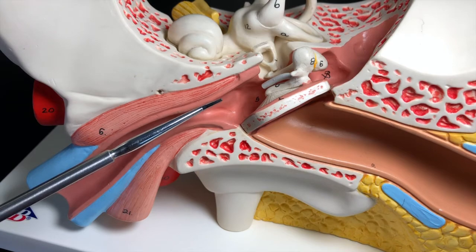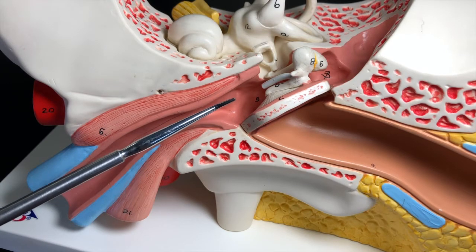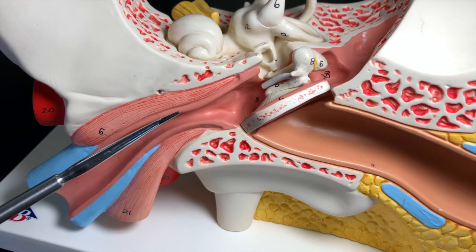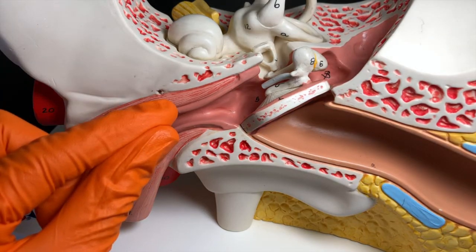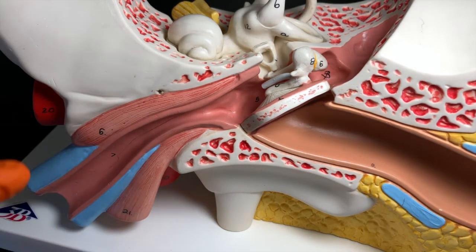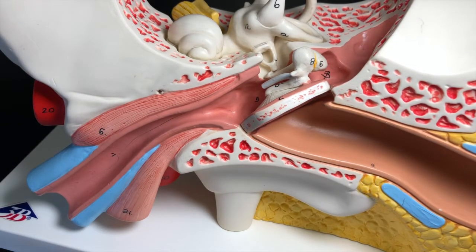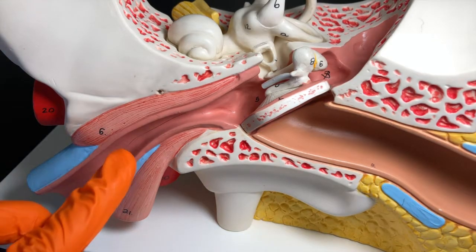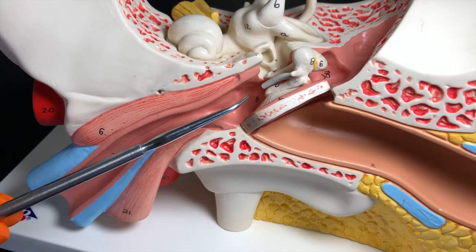This tube will actually open up into our nasopharynx, and it's normally closed except when we open our mouths to chew or to swallow or to yawn. The purpose of this tube is to help equalize the pressure on either side of the tympanic membrane.